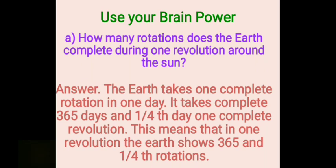Use your brain power: How many rotations does the Earth complete during one revolution around the Sun? The Earth takes one complete rotation in one day. It takes 365 days and one-fourth day, that is 6 hours, to complete one revolution. This means that in one revolution, the Earth shows 365 and one-fourth rotations.